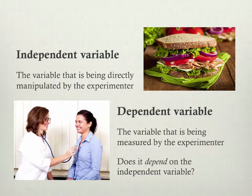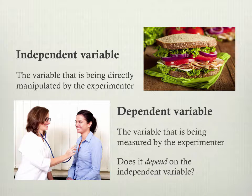When you do an experiment, you usually want to separate your participants into at least two different groups. So, for example, if we're doing this experiment trying to see whether a diet type causes — say, whether a vegetarian diet causes poor health — we would at least want to have two groups.